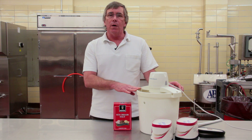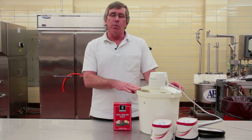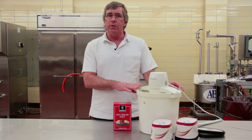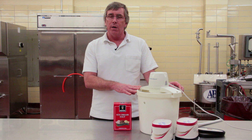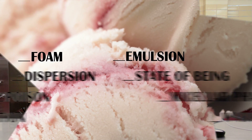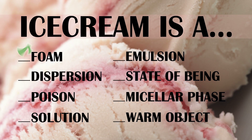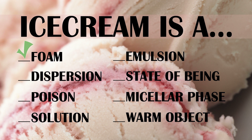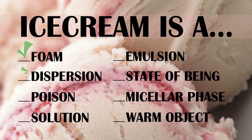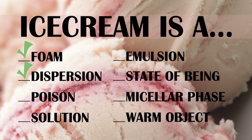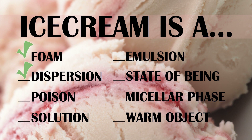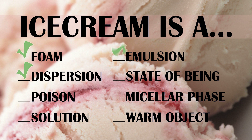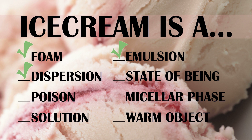Ice cream is an interesting and probably one of the most complex food materials there are. It's a foam because we're aerating. It's a dispersion because it's got ice crystals in there. It's an emulsion because there are fat globules.